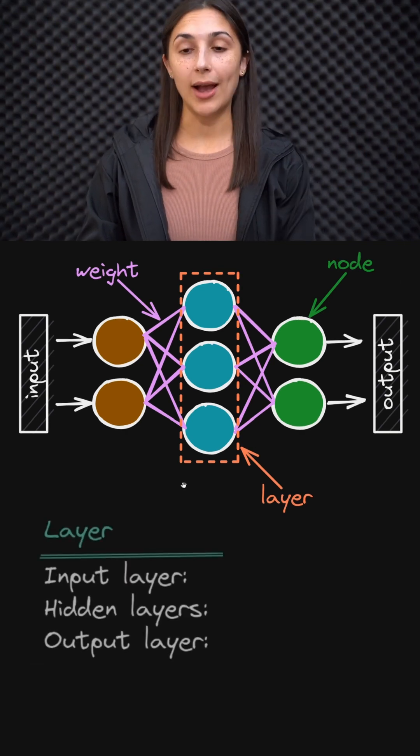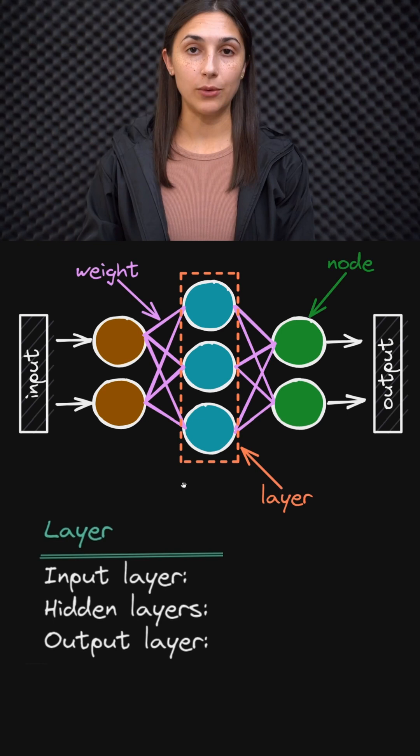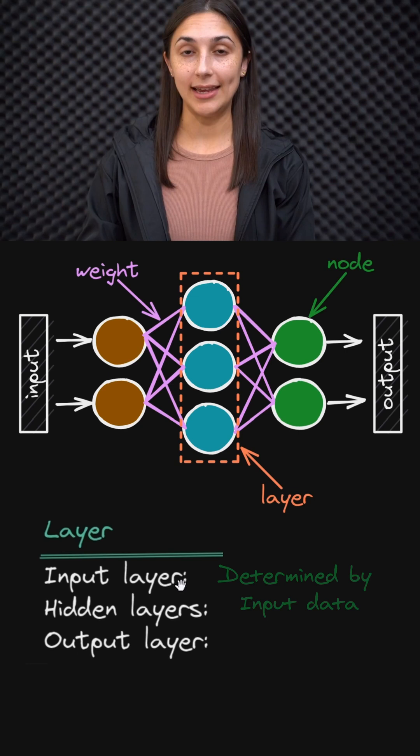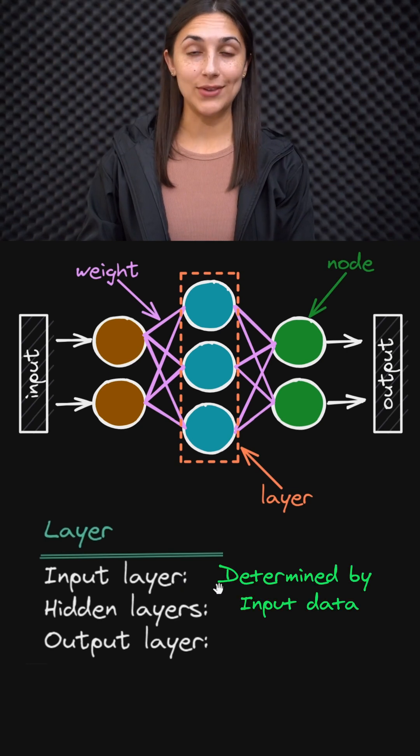So how do we go about choosing the number of nodes for each layer? Well, for our input layer, we don't really have a choice. It's determined by the input data. The input layer just receives the input data and then passes it as is to the first hidden layer.